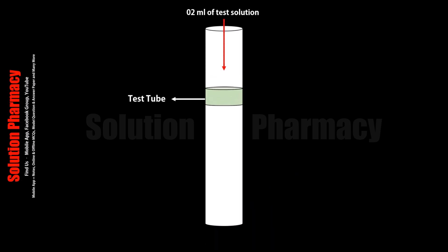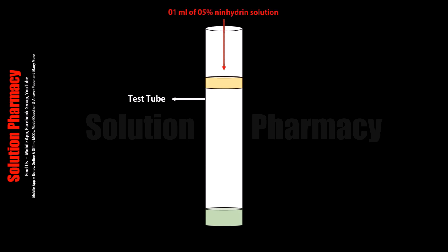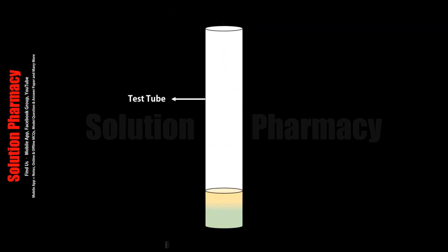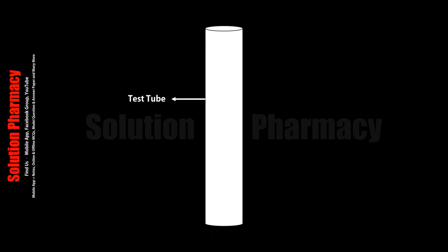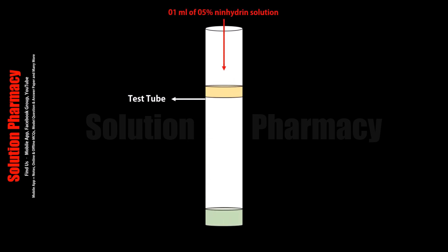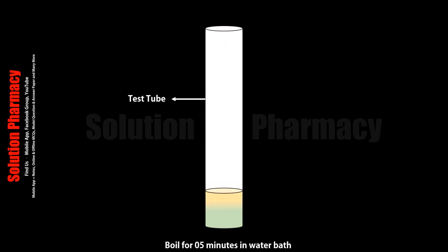In this test, when we add ninhydrin reagent to our test solution and if the color of the test solution turns to a deep or purple color, it indicates the presence of amino acid in our sample. We will demonstrate this test in more detail along with its principle at the end of this video. Now let's know the procedure of the ninhydrin test.